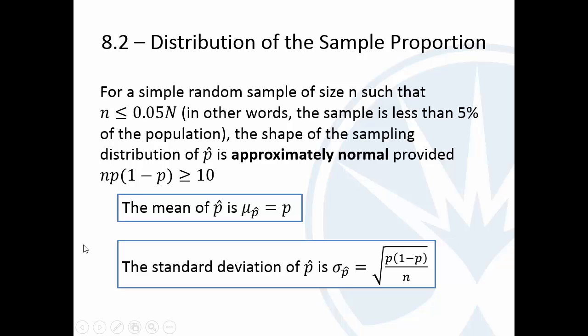There's two conditions in order for us to be able to hold. Our sample has to be less than or equal to 5% of the population. We can't have the whole population because then we don't really have a sample proportion. And then the second condition is that the binomial is approximately normal.